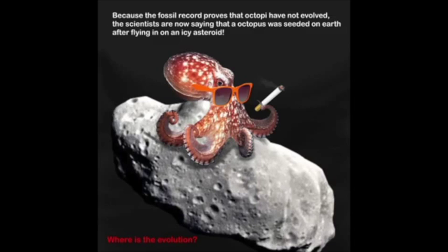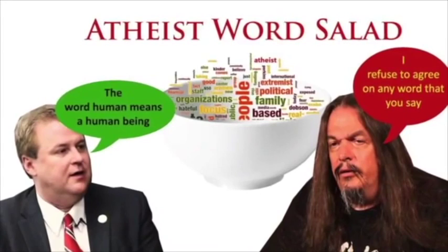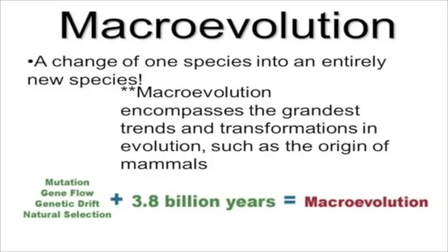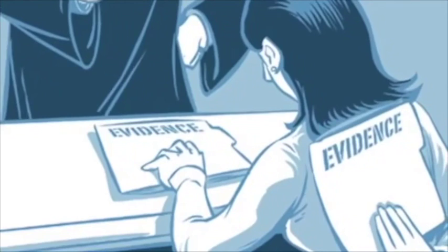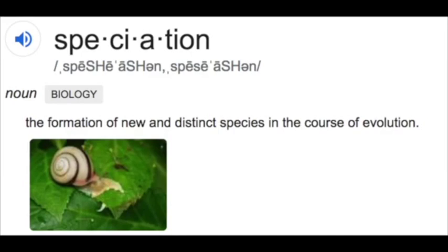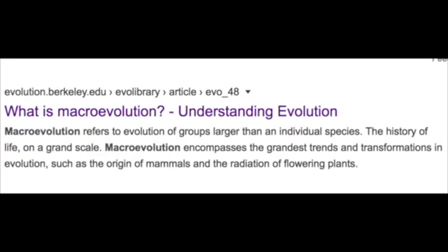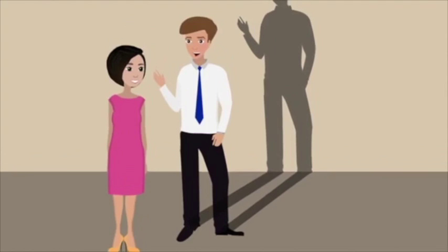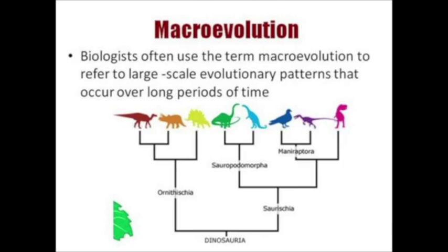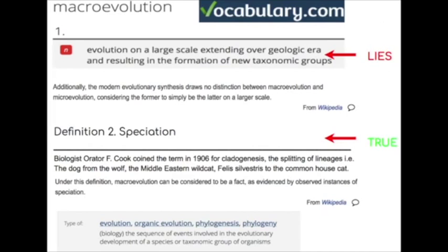Atheists are great at word salad and twisting the definition of words around. Macroevolution is the perfect example, because they know it has two definitions. So when a creationist says that macroevolution is not true, they immediately jump on the opportunity and use the other definition of the word, which is speciation — which is true — all while ignoring the other definition entirely, which is large-scale change over time, like a dog to a whale, which is not true. They do this knowing full well that they are being deceitful. So the next time an atheist tries to play word games, remind them of the actual definition of the word and how they mix truth with lies to push their agenda.